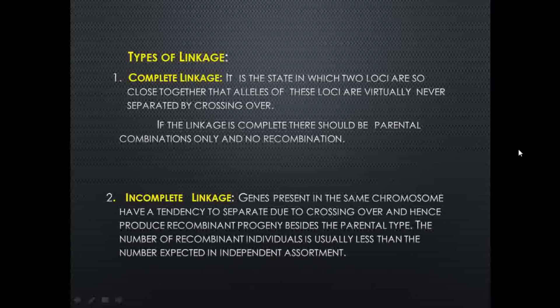For example, if genes A and B are very closely linked, the gene combination inherited from the parents will remain the same in the offspring — they won't separate. Therefore, in complete linkage, genes do not show any recombination in the next generation.